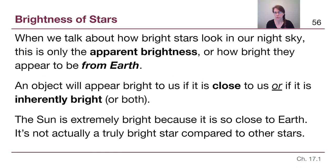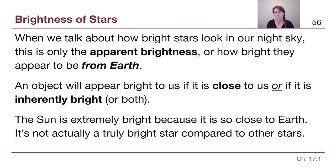The first thing we need to understand when talking about how bright stars are is that there are two different things to consider. There is how bright stars look from our view here on Earth, and how bright stars physically, truly are no matter what our distance is. The first is called apparent brightness — it is based on our view of stars looking bright or dim in our sky. The second is called absolute brightness, which we'll introduce with the alternate term luminosity. An object can appear bright to us if it is close by, or if it is inherently bright, and sometimes both.